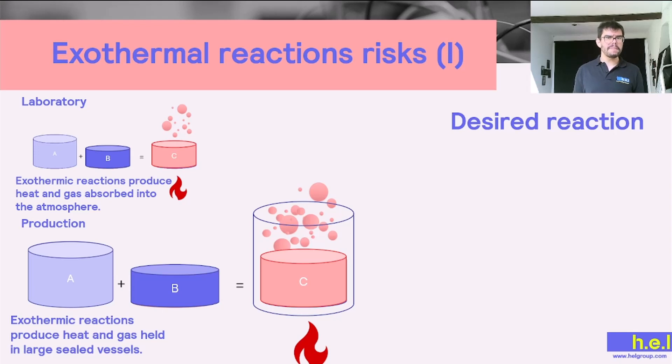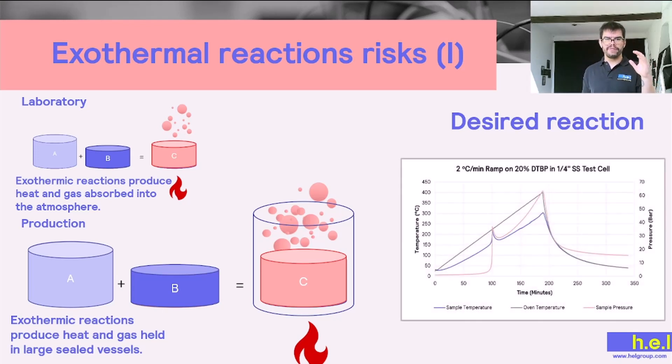And this is only if we analyze the desired reaction. So if we think of our reaction A plus B to generate C and we look at the evolution of the temperature, we can see that it's going to slowly and steadily increase until the reaction accelerates, and then we are going to see a spike in the temperature. And the same is going to happen with the pressure - pressure is going to remain more or less stable until the reaction is going to accelerate, and then we are going to see the accumulation of pressure.